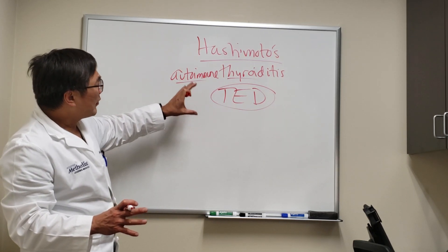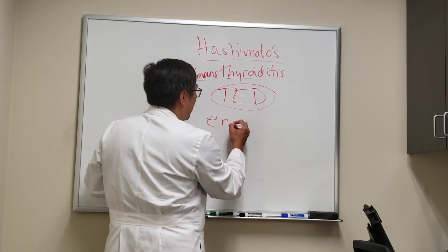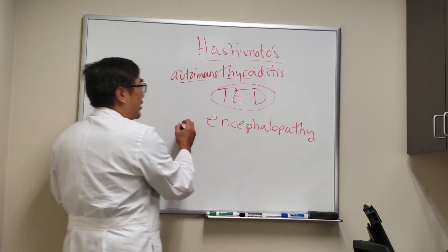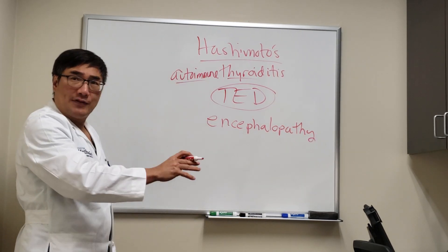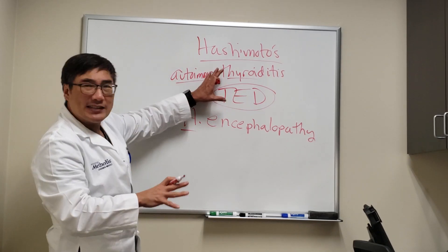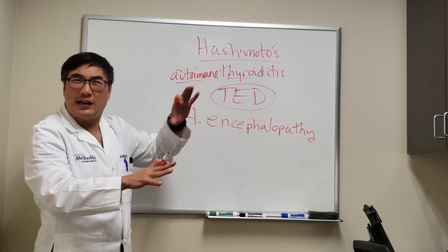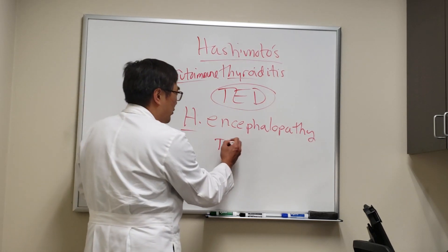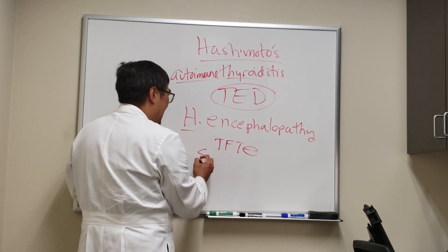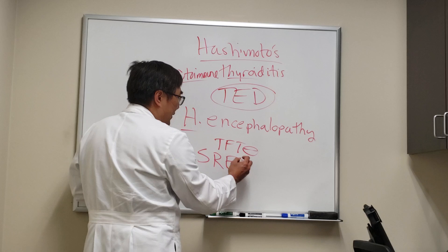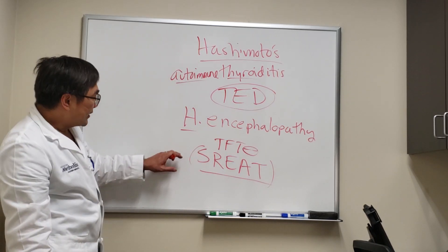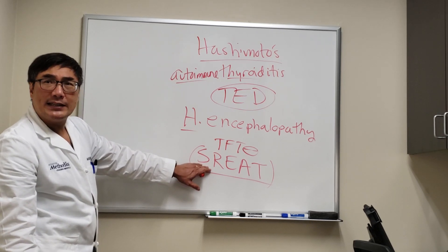What we're going to talk about today is that Hashimoto's can also be associated with an encephalopathy. When I was a resident, we called this Hashimoto's encephalopathy. However, because it's not clearly related to thyroid function — in fact, usually thyroid function is normal or near normal because they're treated with Synthroid — this is now called steroid-responsive encephalopathy of autoimmune thyroiditis, or SREAT. Steroid responsiveness is the key diagnostic feature; they have to get better with steroids.